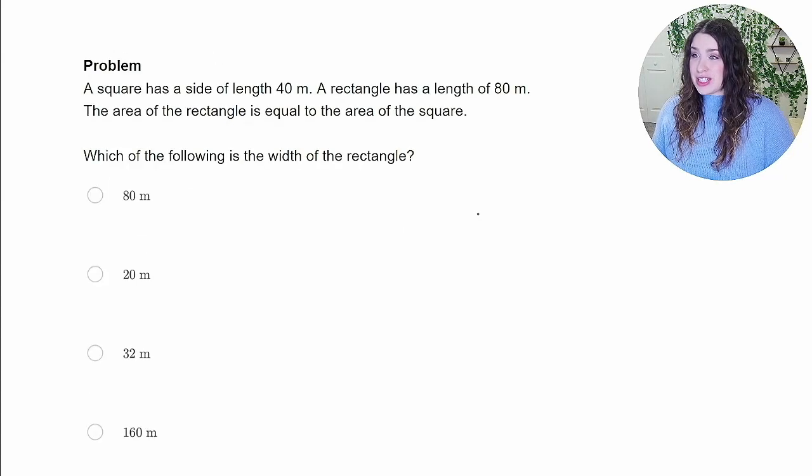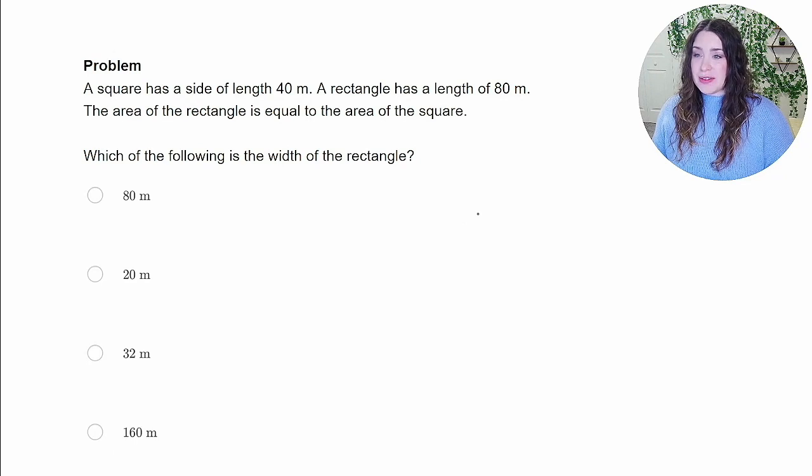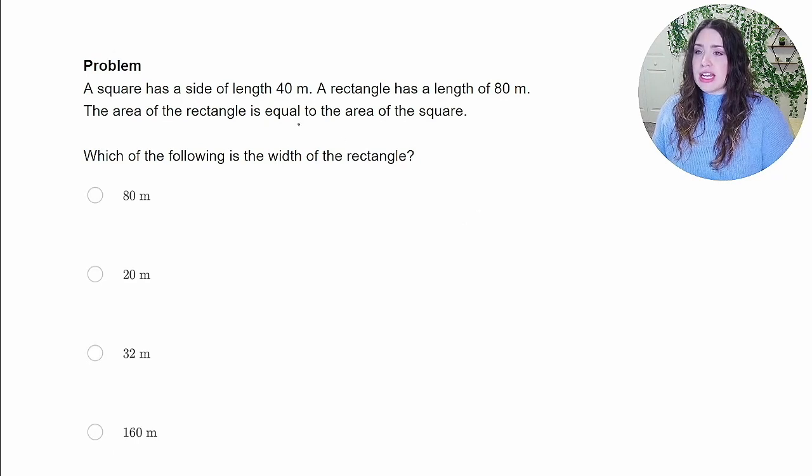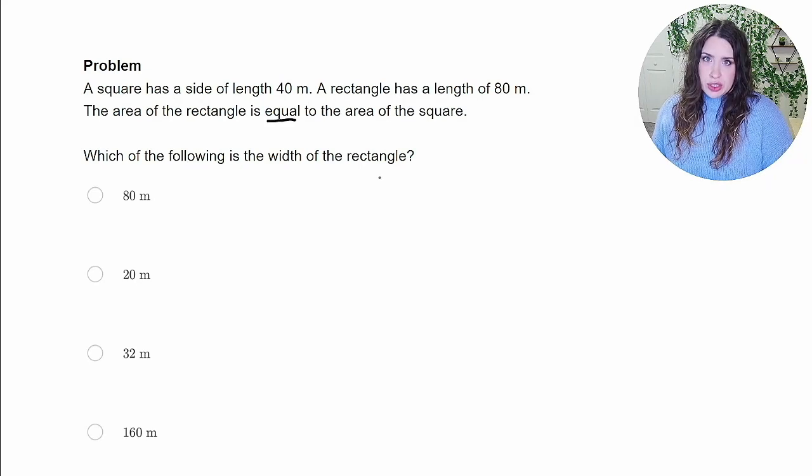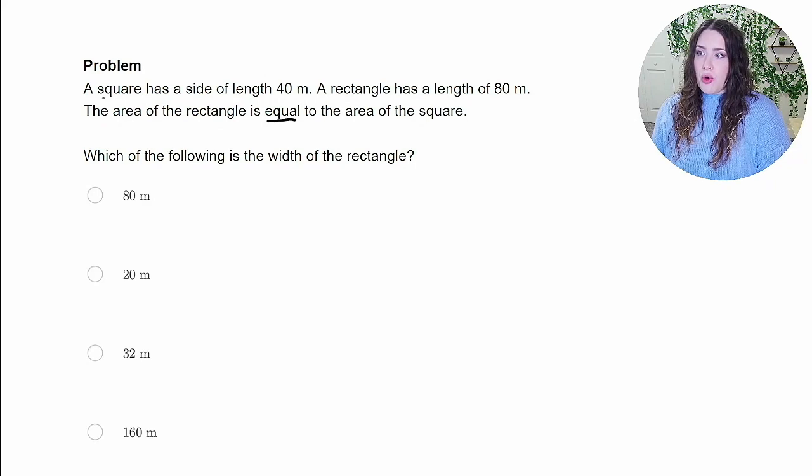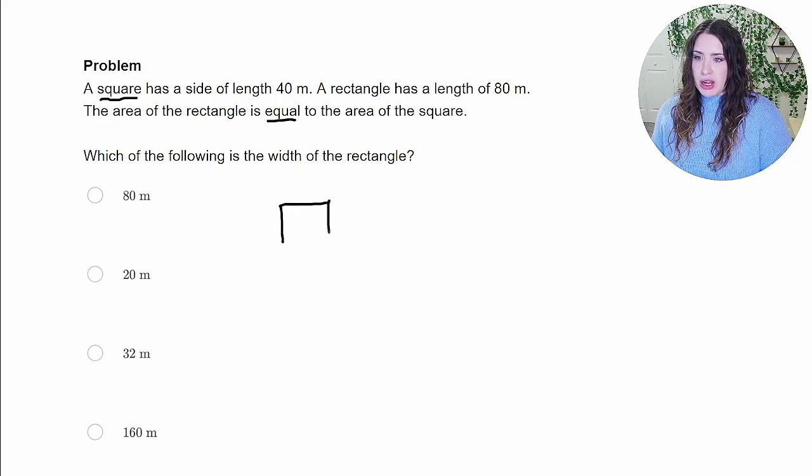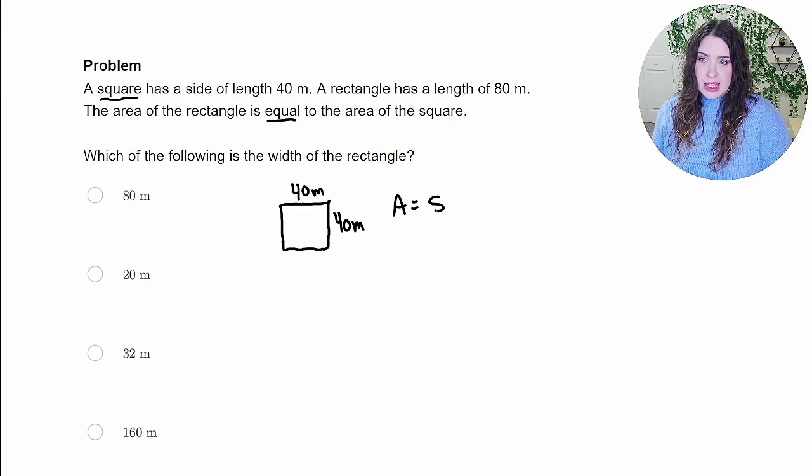All right. This question says a square has a side length of 40 meters, a rectangle has a length of 80 meters, and the area of the rectangle is equal to the area of the square. And we want to find what the width of the rectangle is. So we can start with the square because you may recall that a square has equal length and width. So we know that it's 40 meters by 40 meters.